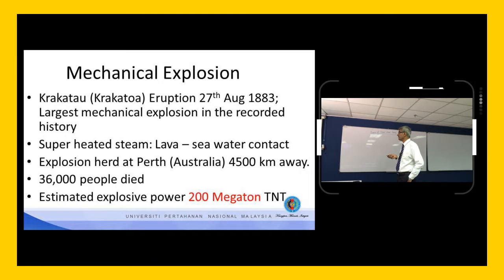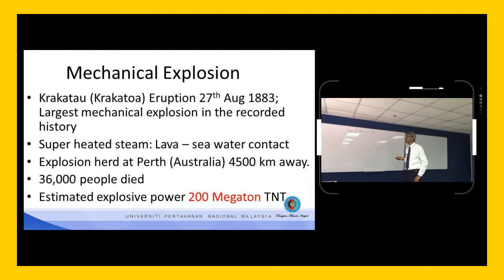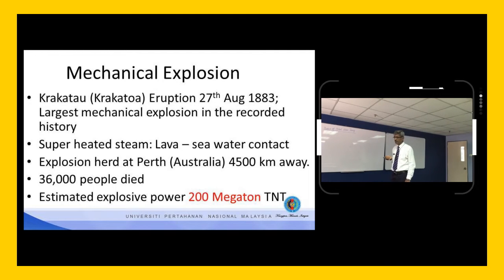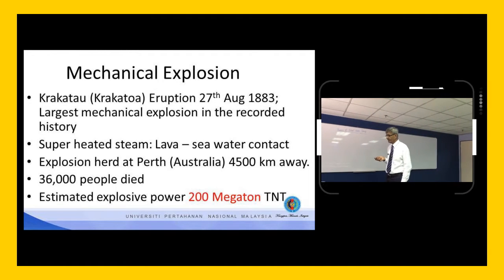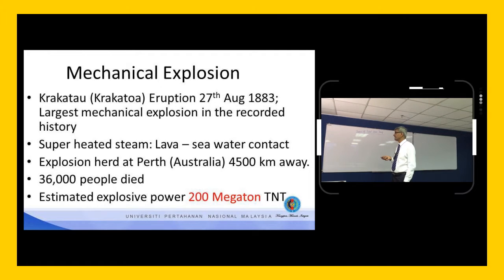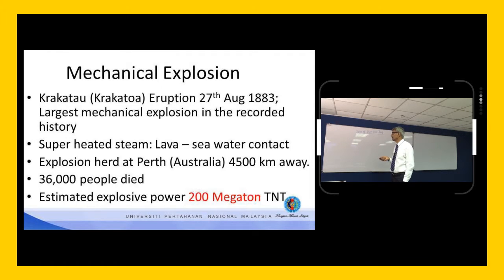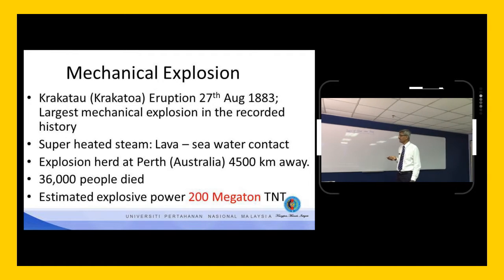Basically what happened is that superheated steam was generated. A huge amount of lava came into contact with cold seawater, and this very hot lava generated superheated steam, which caused the explosion. The severity was such that it was heard in Perth, Australia — about 4,500 kilometers away.